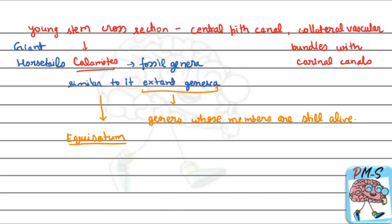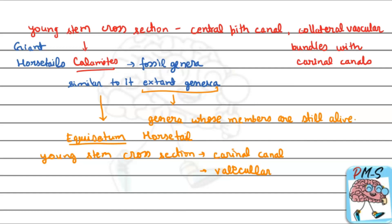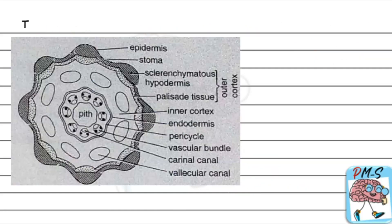Equisetum's other name is horsetail. The young stem cross-section of Equisetum shows carinal canals and vallecular canals, and a central pit canal. Let's look at the diagram — this is the TS of young stem of Equisetum.